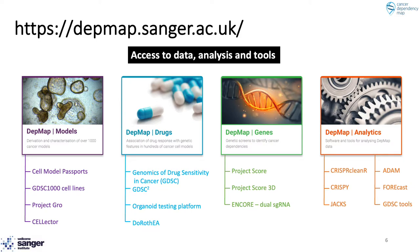The Sanger effort is composed of four main parts, or what we call programs, each of which contains multiple individual projects that contribute to the larger whole. These are broadly defined into DepMap models, drugs, genes, and analytics — and we see these as some of the core components required to deliver on a dependency map.